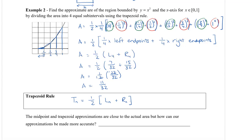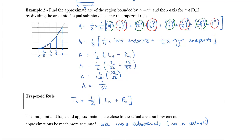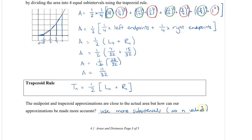The midpoint and trapezoid approximations are close to the actual area, but to make them even better we could use more subintervals. It would be great if we could use an infinite number of n values — then it would be perfectly under the curve; we'll take a look at this later on. To finish off, I'm going to show you how to use approximation to solve distance problems.